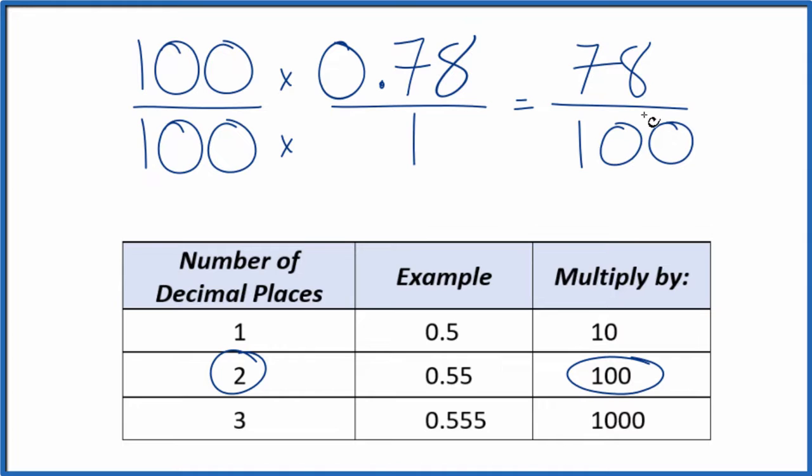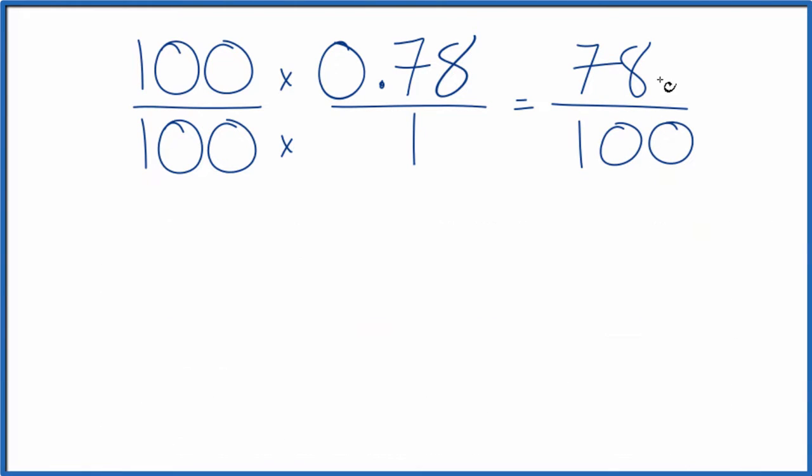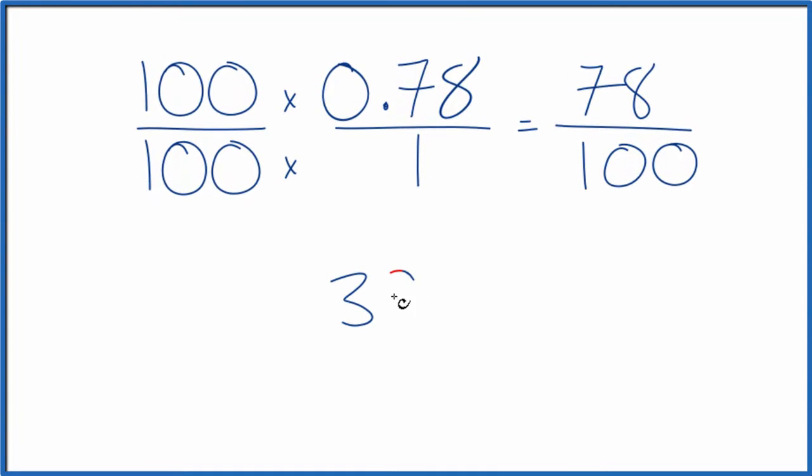We could simplify this further since they're both even numbers. Let's give ourselves some room here. So if we divide 78 by 2, we end up with 39. If we divide 100 by 2, we get 50. So we could simplify 78 over 100 down to 39 over 50.